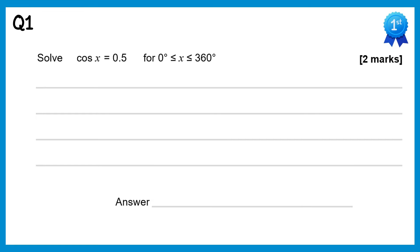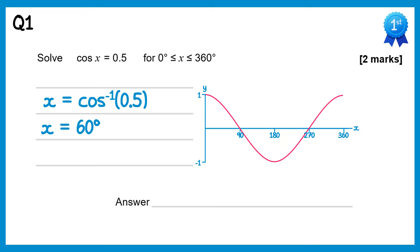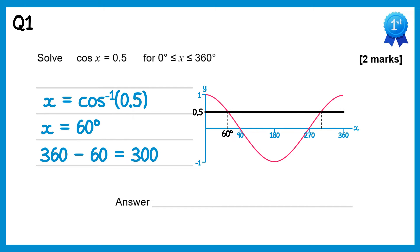We start off by doing inverse cos of 0.5. You should know inverse cos of a half is 60 degrees. We draw the graph of y equals cos x to find the other solution. If we draw a line at 0.5 you'll see there are two solutions. We've already got the left one at 60, and to get the right one we use the symmetry of the graph: 360 take away 60 is 300 degrees. So there are two solutions: 60 degrees and 300 degrees.